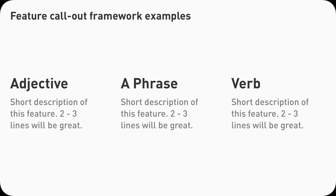Here's a mini framework I've noticed and used before. You can start with adjectives and then a few lines — maybe three lines of short captions. Or you can start with a phrase and then a caption. Or start with verbs, which feels more active and actionable, and then a caption. There are of course more to explore, but if you don't know what to do, just pick one of these and get your project going. And that is a perfect segue to number two.